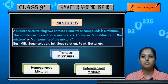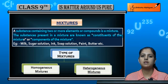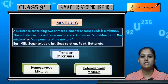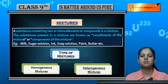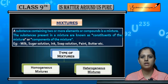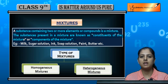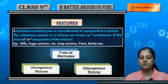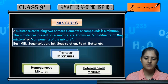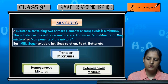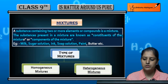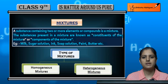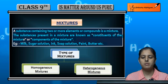For example, air is also a mixture — it is a mixture of gases. The gases that make up air are its constituents and components. Other examples include milk, sugar solution, ink, soap solution, paint, butter, etc. These are all mixtures.